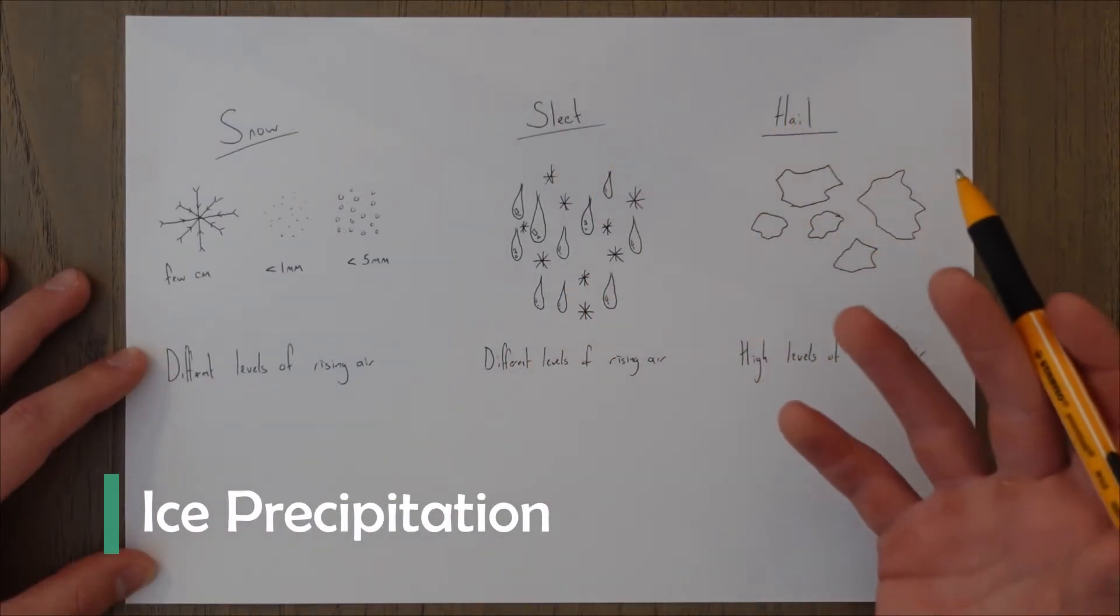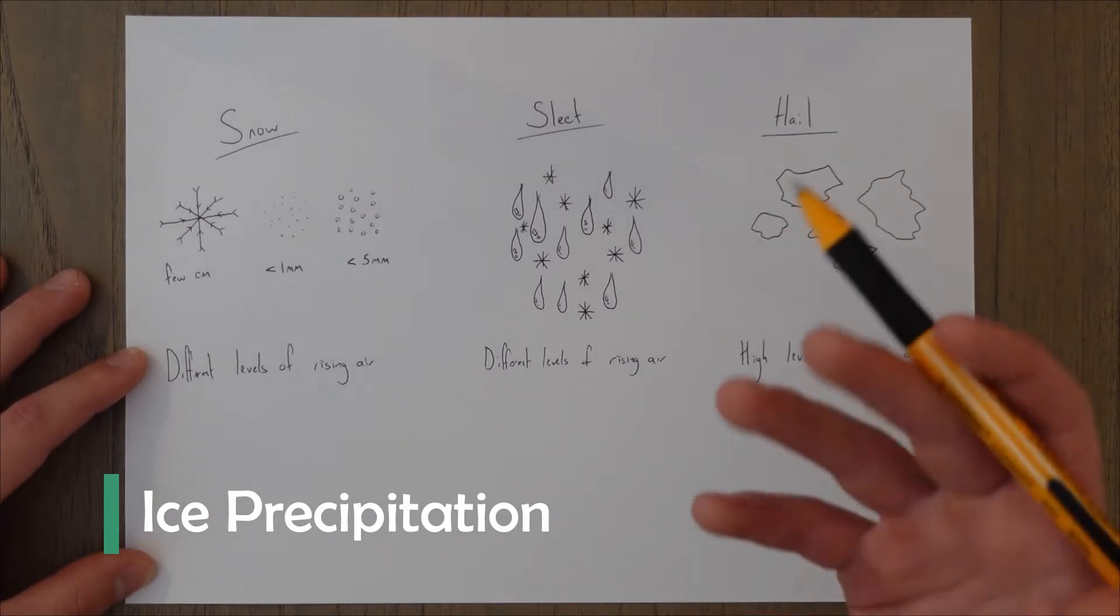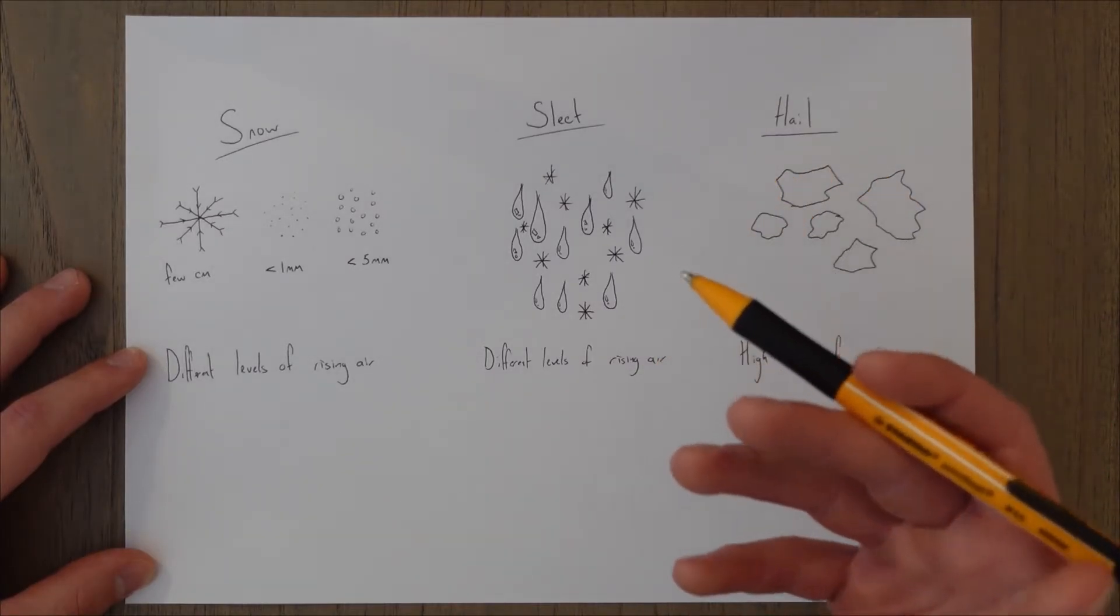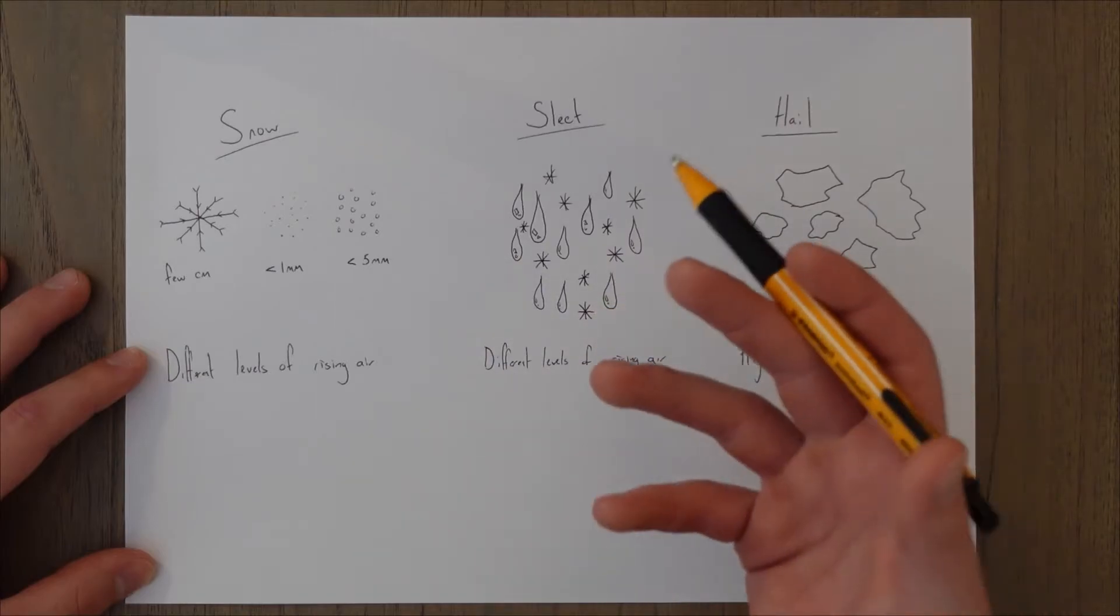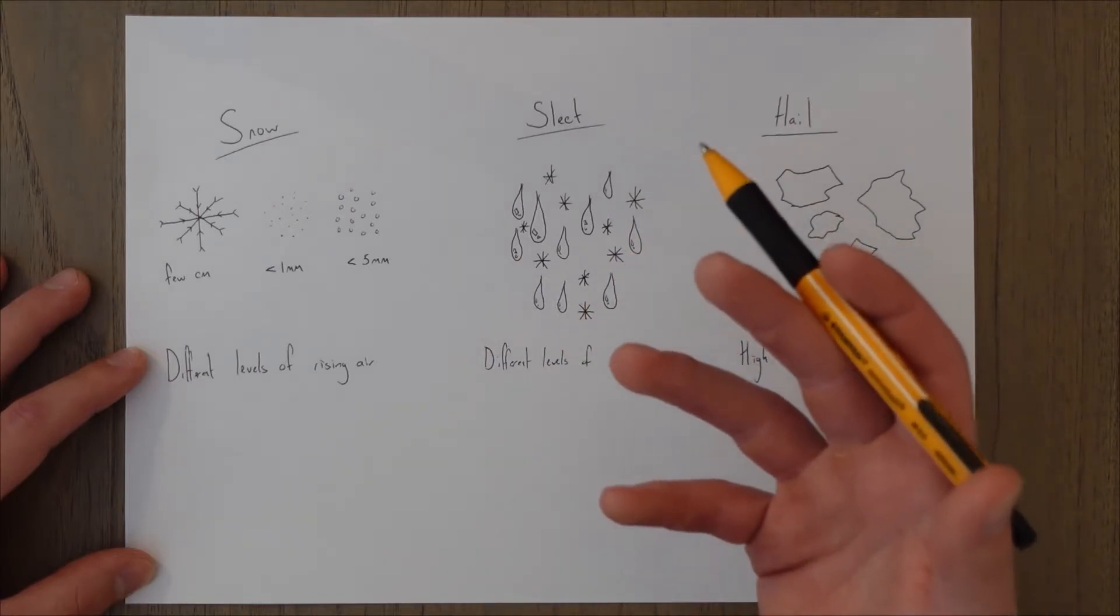When the temperature in the cloud is cold enough to form ice then the precipitation will fall from the cloud as ice but it may melt as it heats up and descends down back to earth.